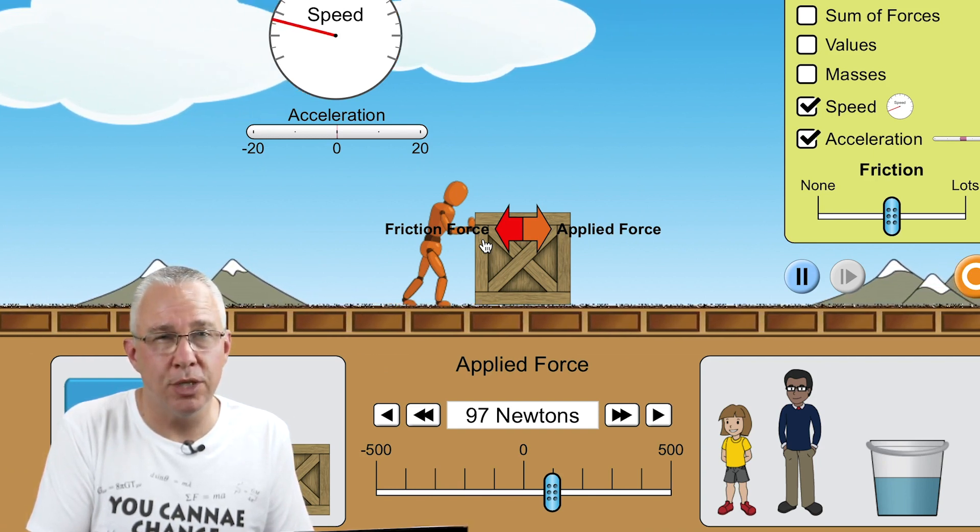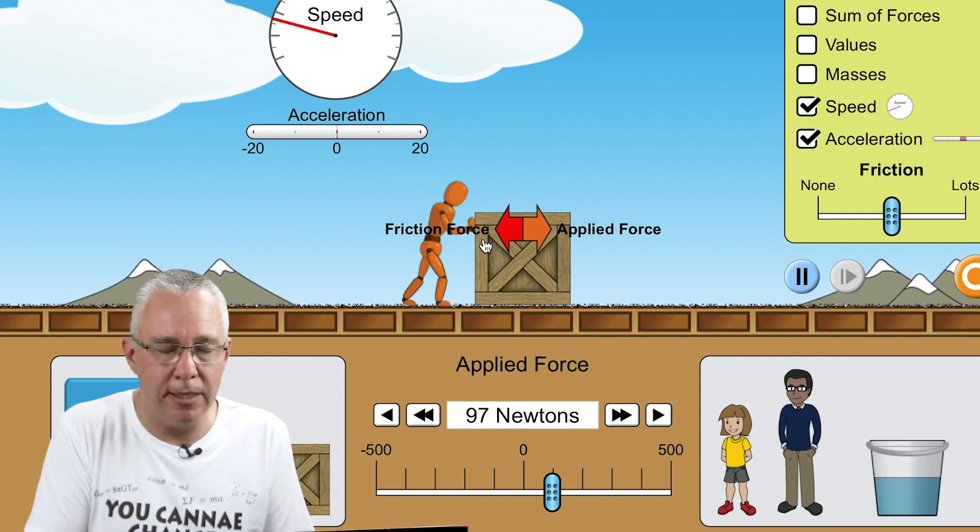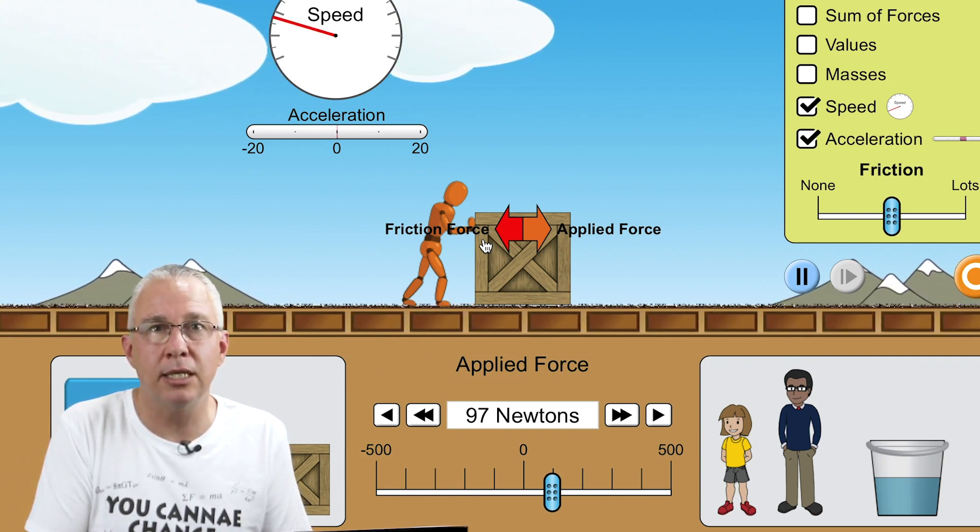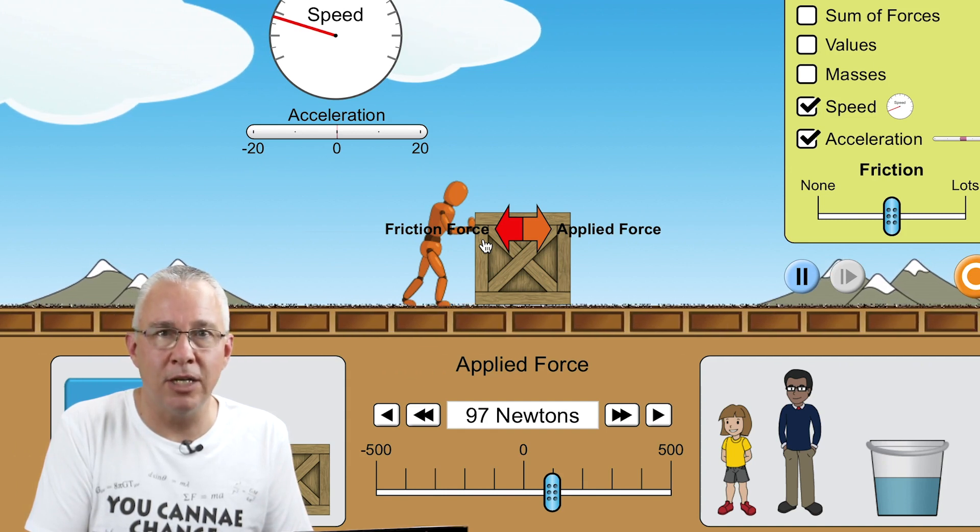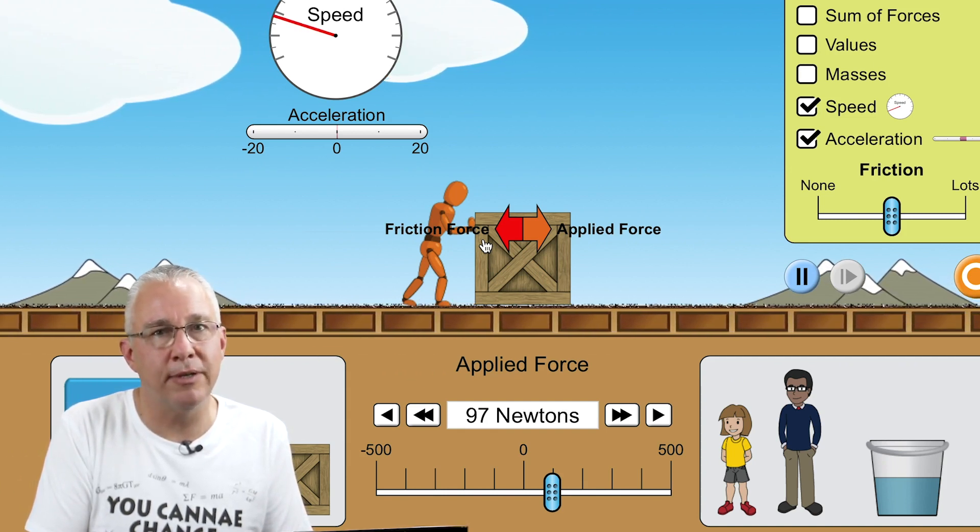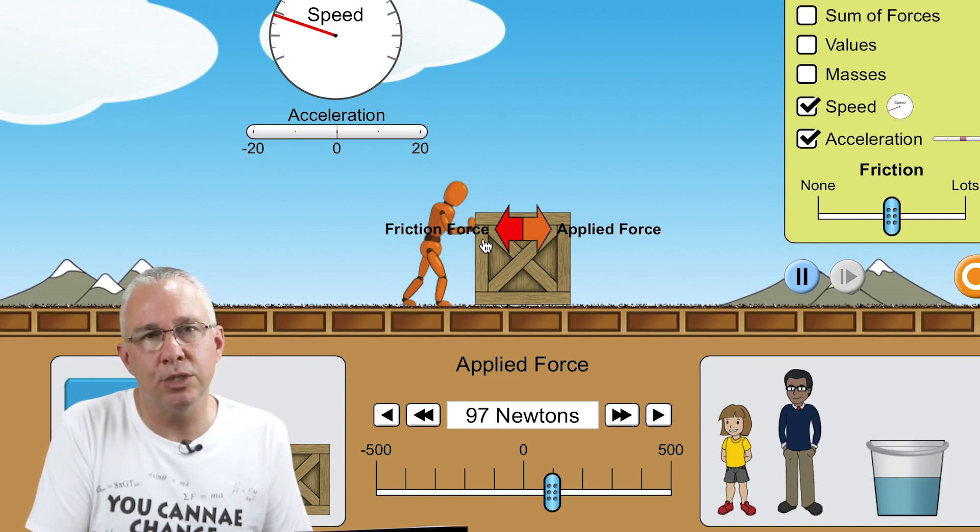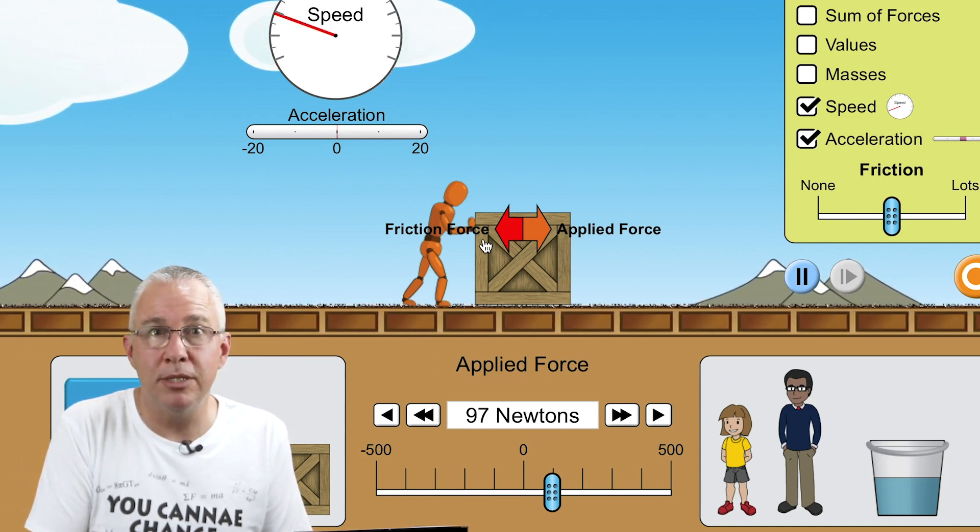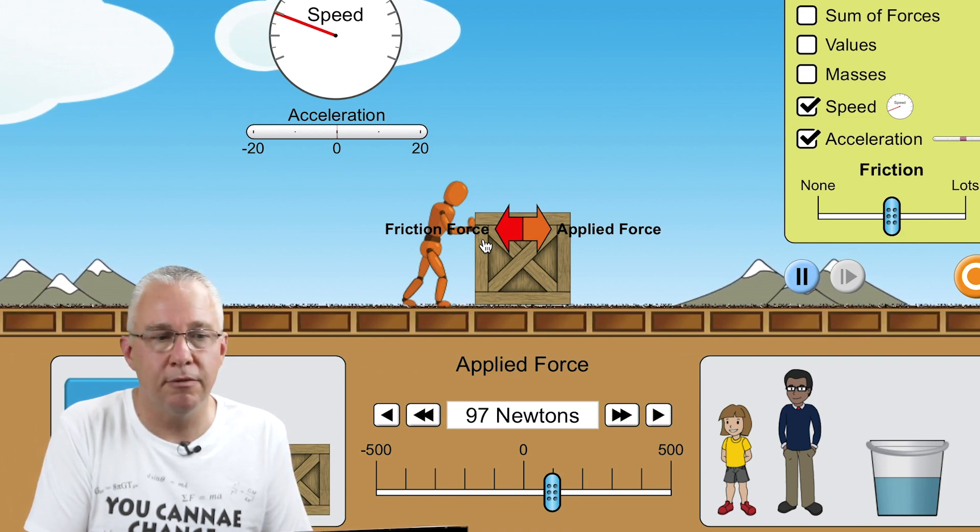And this of course applies also to the concept of inertia, which simply says an object resists a change in its acceleration. So if it's traveling at a constant velocity, it will stay traveling at a constant velocity. If it's stationary, it will stay stationary. It'll only move if it is experiencing an unbalanced net force.